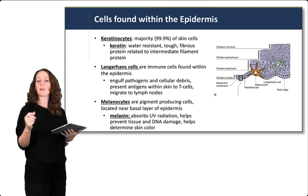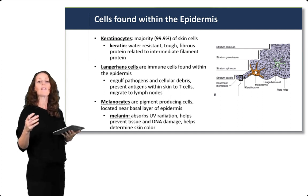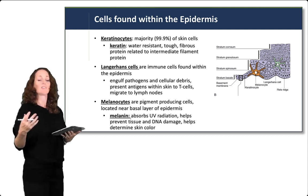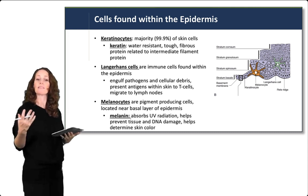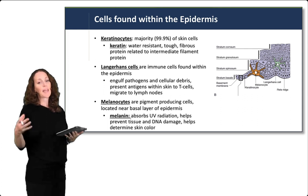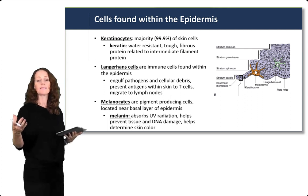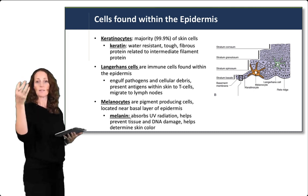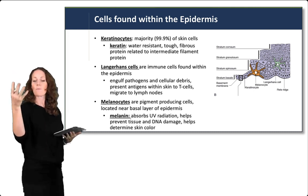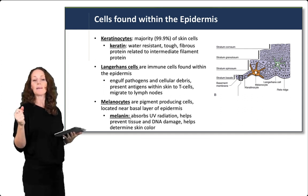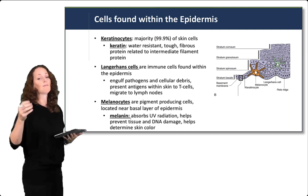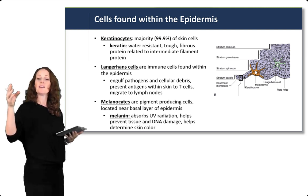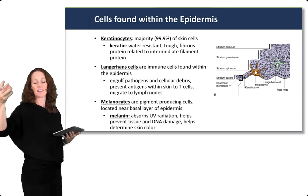The immune cells within the epidermis are called Langerhans cells. They have an important immune function — both macrophage-like activity, engulfing pathogens and cellular debris, and acting as antigen-presenting cells. Antigen-presenting cells take up pathogens and present antigens found to the surface of those cells so that immune cells can recognize and seek out those antigens within the body. Langerhans cells can even migrate to lymph nodes to act as immune sentinels, presenting antigens so immune cells can recognize that pathogens have entered the skin.